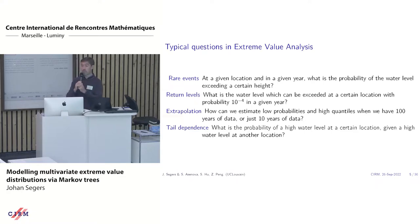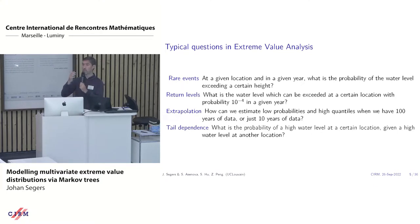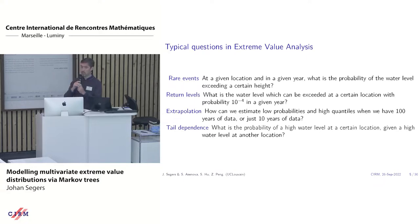Of particular interest here is that we're not just interested in the height at one given location, but we have a whole network of locations. Of course, if there is a lot of water at location A, it's not unlikely that there will also be a lot of water at location B. So we are interested in dependence between such extremes.